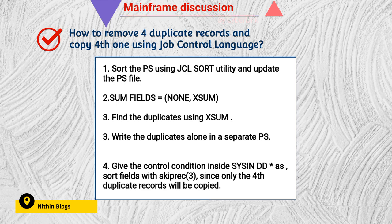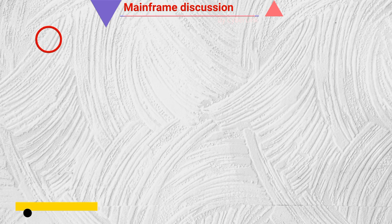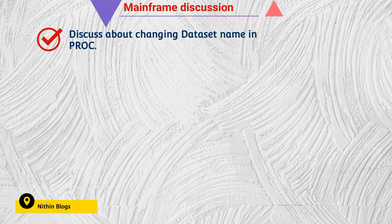By using XSUM we can take the records into a different dataset, and there we use the SORT card with SKIPREC=3. This allows us to isolate the particular fourth duplicate record, which will then be copied and displayed.